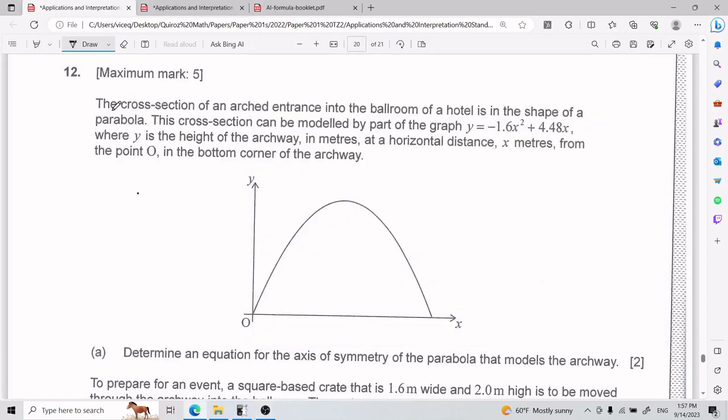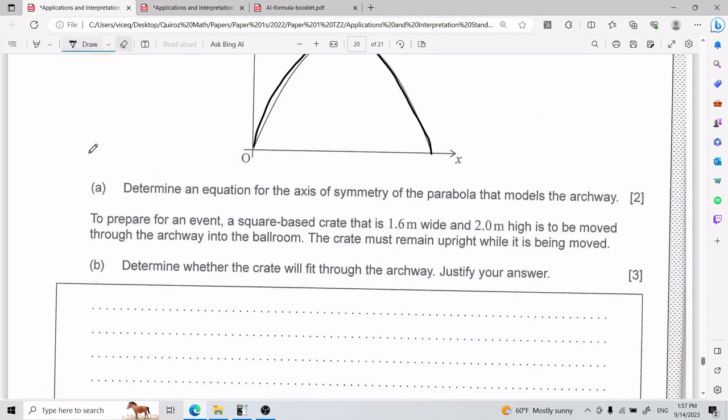Alright, and now for number 12. We have that the cross-section of an arced entrance into the ballroom of a hotel is in the shape of a parabola. This cross-section can be modeled by part of the graph y equals blah, where y is the height of the archway in meters at a horizontal distance x meters from the point O in the bottom corner of the archway. For part A, we have to determine an equation for the axis of symmetry of the parabola that models the archway.